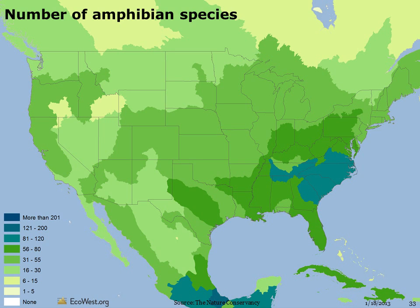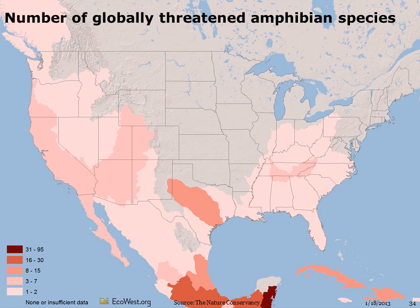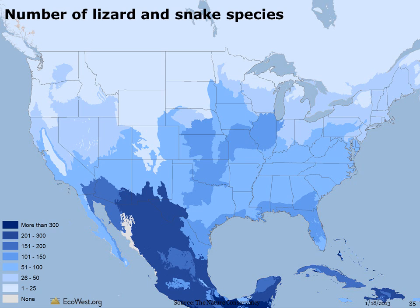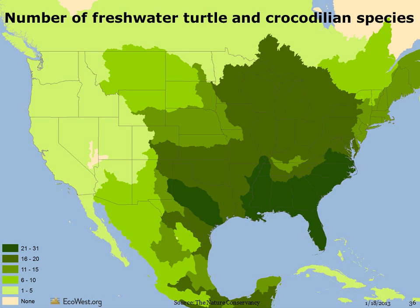For amphibians, the southeast US has the greatest number of species, and an especially large number of salamanders. There aren't as many amphibians out west, but there are still plenty in places like the Colorado Plateau and Mojave Desert. Many amphibians around the world are threatened. In the US, Texas has the most threatened amphibian species; there are 3 to 7 such species in California, Oregon, and the Four Corners states. As you might expect, the number of lizard and snake species is highest in Arizona and New Mexico. There aren't many crocodiles outside of Florida, but even in drier areas such as the southwest and northern plains, there are plenty of turtles.